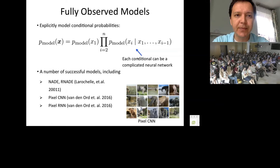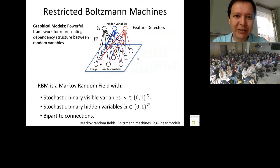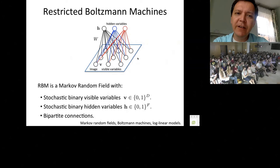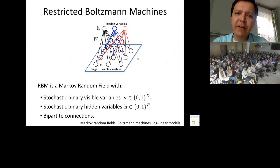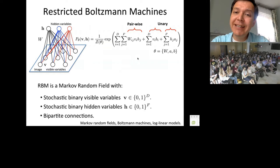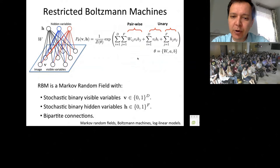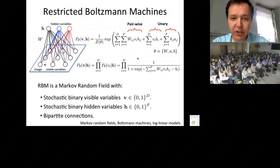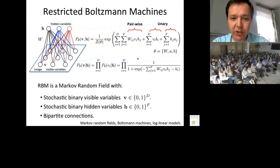Let me step back and introduce some older models. The Restricted Boltzmann Machine, developed around 1986, is an instance of a graphical model with stochastic binary visible variables V and stochastic binary hidden variables H — the hidden variables act as feature detectors. You can specify the joint probability distribution of observed and hidden variables; it's a log-linear model, also called a Markov random field or Boltzmann machine. It's a bipartite graph, and the conditional probability of data given features is given by a product of logistic functions.